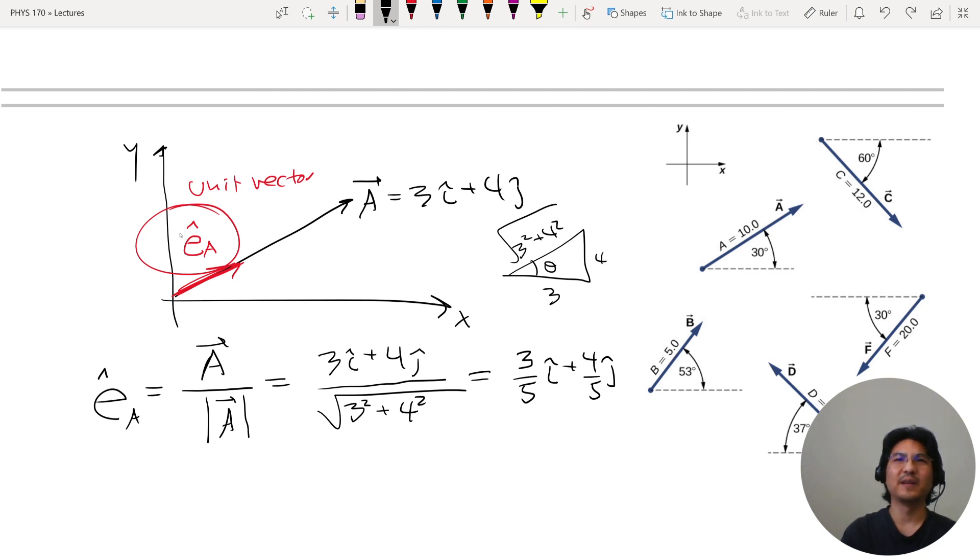And then let's say I want to find this angle over here, like what's this angle? I can just pick one of my sine or cosine or tangent, maybe tangent. Tangent theta equals opposite over adjacent. So in this example, 4 over 3. So therefore, the angle is just the arctangent.